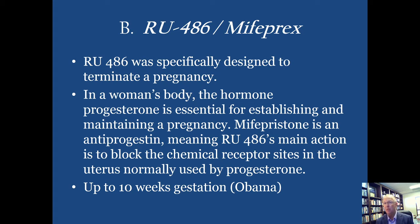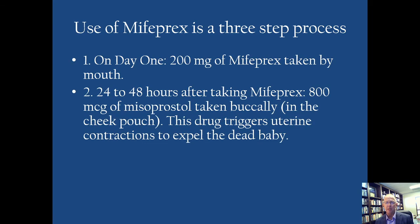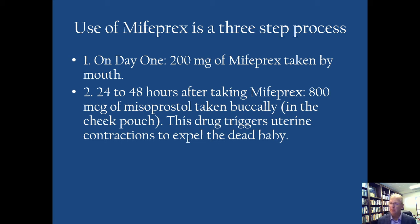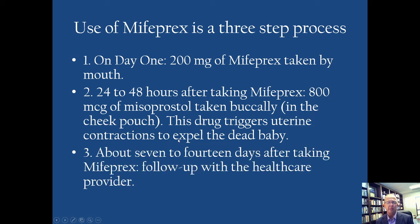It can be used up to 10 weeks gestation. Originally it was legal through 7 weeks; the Obama administration extended it to 10 weeks. It's basically a three-step process. On one day, the woman takes the Mifeprex. Then 24 to 48 hours after taking Mifeprex, she takes Misoprostol. This drug triggers uterine contractions to expel the dead baby. So the Mifeprex causes the progesterone to stop doing its job inside the mother's womb and the baby dies, and then she takes the second drug, Misoprostol, to have the miscarriage itself. About 7 to 14 days after taking Mifeprex, she follows up with the healthcare provider. This is not a simple one-step process — there are three steps.